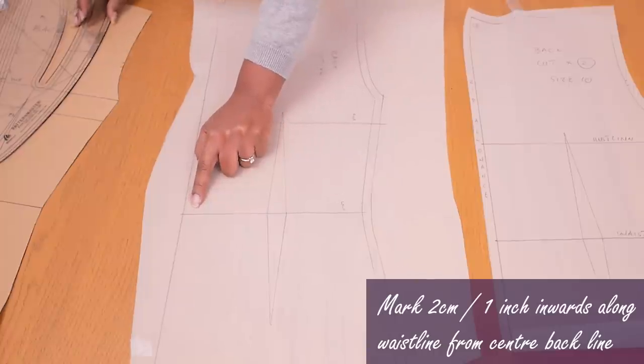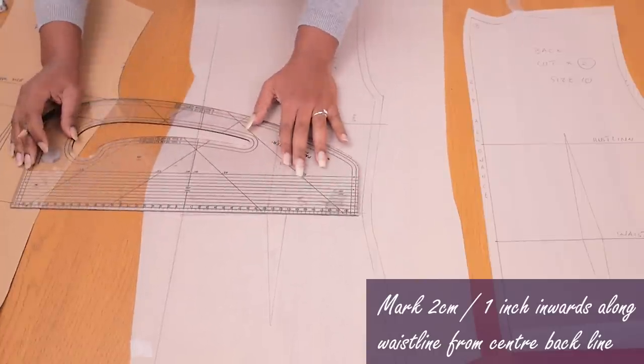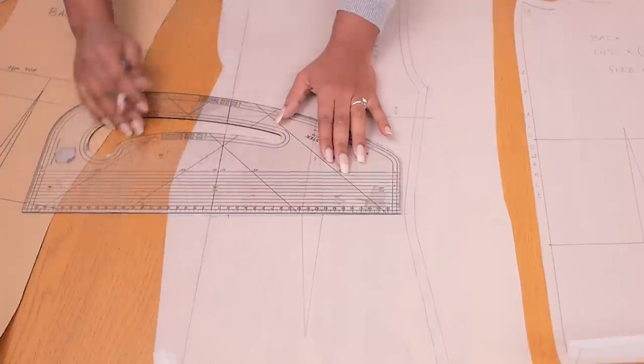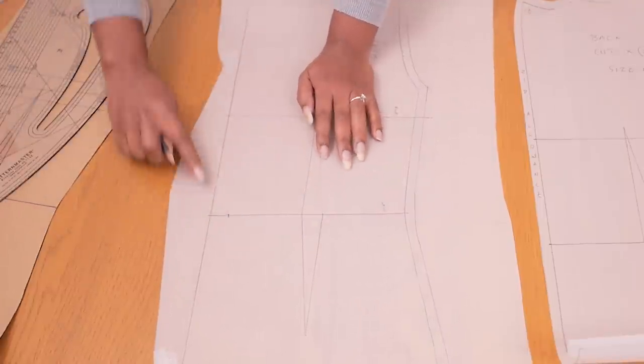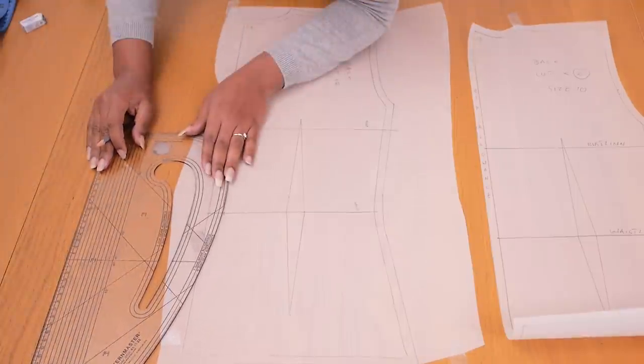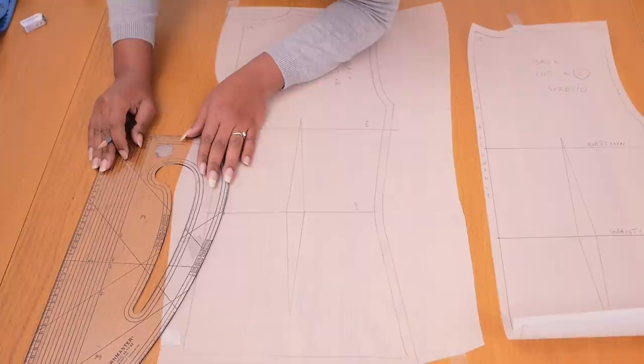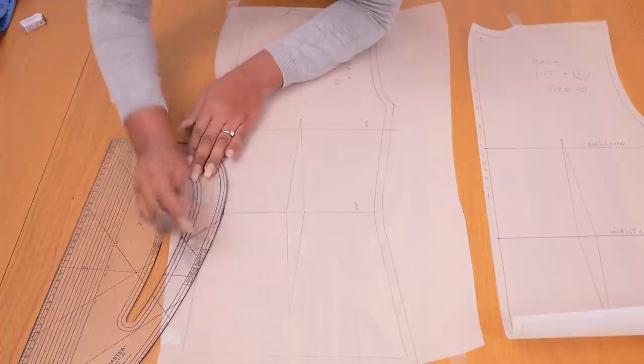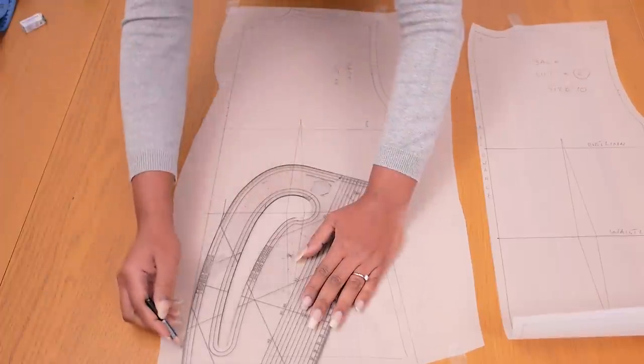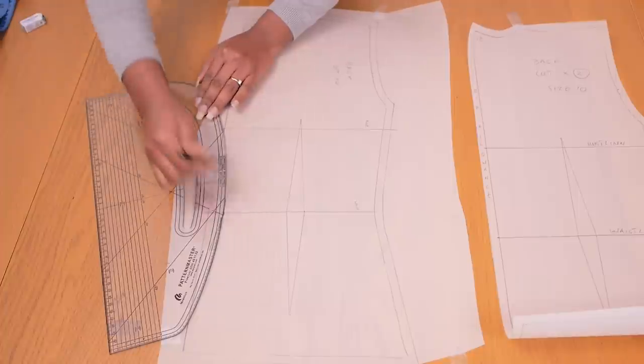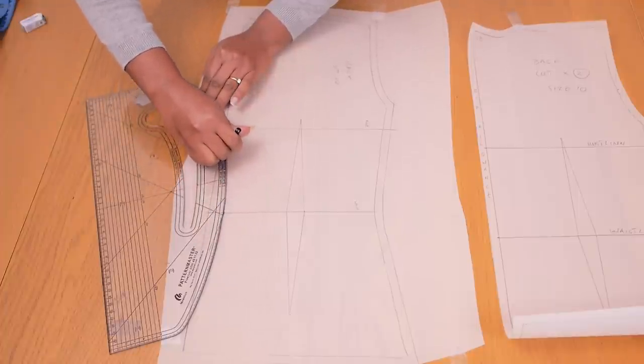So for this, my second one, we're going to be marking two centimeters or about one inch inwards along the waistline from the center back like so. From that two centimeter or one inch point, we are going to connect it to our bust line area and down to our hip line area. But you have to do it as a curve and not as a pointed angle because the back of your body is like a nice S-shaped curve. So I'm just going in here to connect the lines like so using my Pattern Master and my pencil.